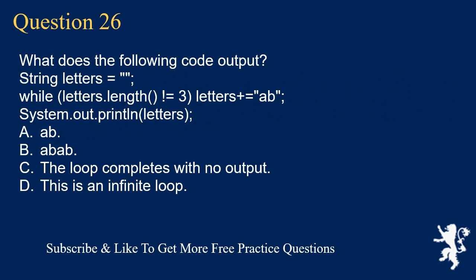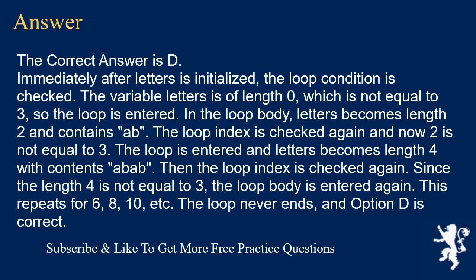Question 26. What is the following code output? String letters = ""; while (letters.length() != 3) { letters += "ab"; } System.out.println(letters); A. ab. B. abab. C. The loop completes with no output. D. This is an infinite loop. The correct answer is D. Letters starts at length zero (not equal to three), so the loop is entered. After one iteration it is length two, then four, six, eight — the length skips over three and keeps growing. The loop never ends, and option D is correct.